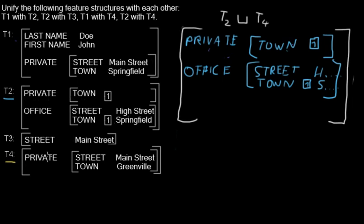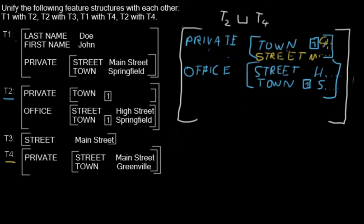In 'private' we have 'street' — nothing was given before, so we add the street with whatever the value is, in this case anything. And we have 'town' with the value greenville, so we add the value greenville. Note: just imagine the value is written inside the brackets — it is the value of 'town' taken from t4.